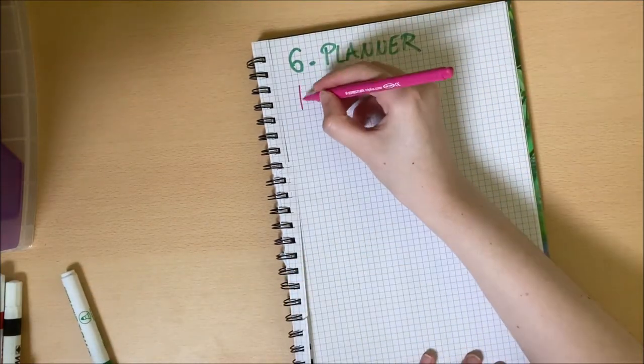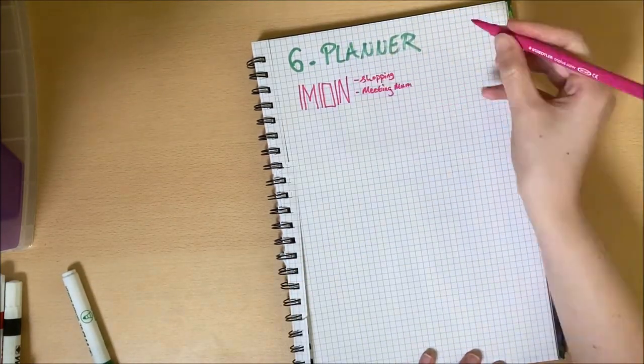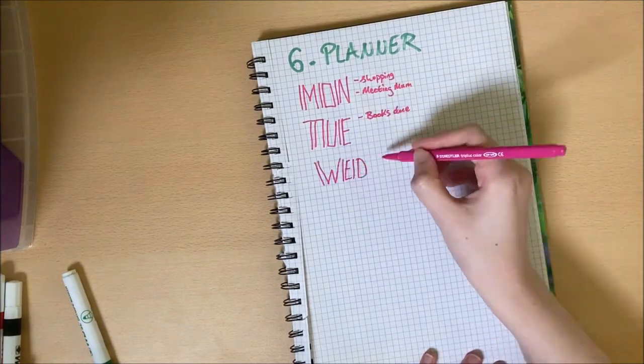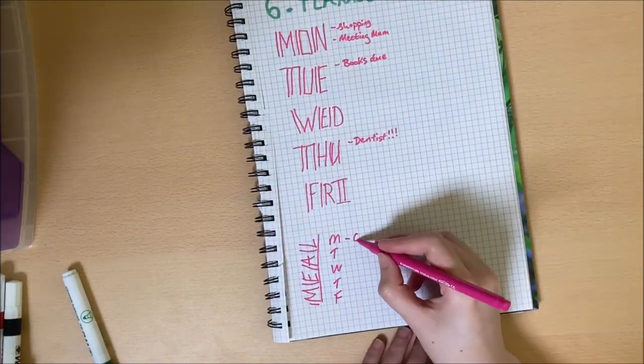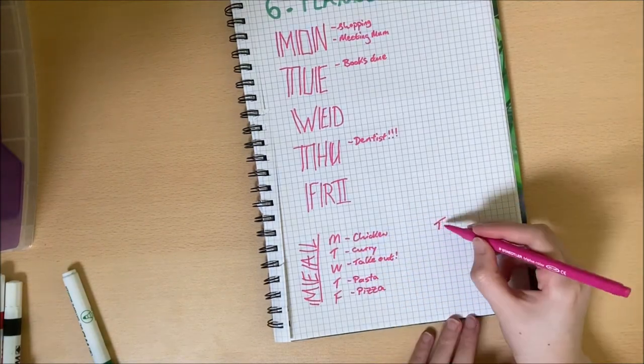Idea number six, use the remaining pages as a planner. This could be a weekly plan, a monthly plan, list the different things that you want to do today or track your meals or goals for the week or month.